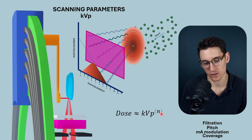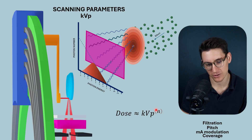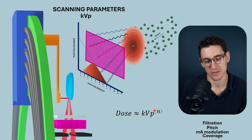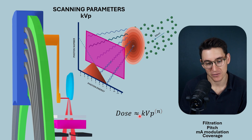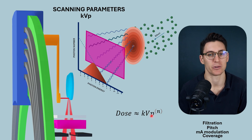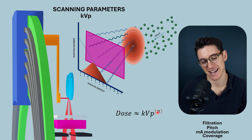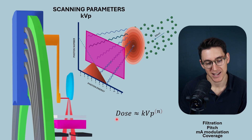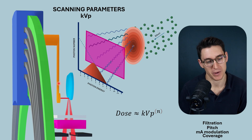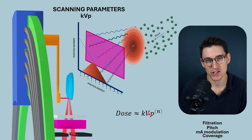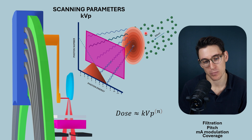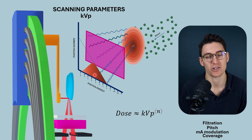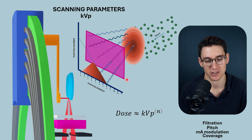Dose is roughly proportional to KVP to the power of n. In traditional radiography, we often say dose is roughly proportional to KVP squared. In CT scanners, n is normally closer to about 2.5 or 2.6, depending on the filtration and the type of CT scanner used. Minor changes in KVP are going to have quite drastic changes in the dose to the patient, predominantly due to the number of x-ray photons heading towards the patient.